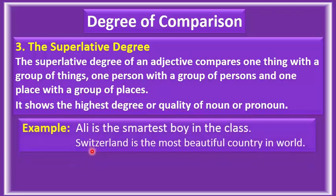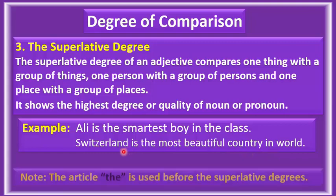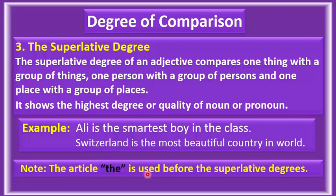For example: Ali is the smartest boy in the class. This is the most beautiful country in the world. Note: the article 'the' is used before the superlative degree. We always use 'the' before the superlative — for example, 'the smartest', 'the most beautiful'.